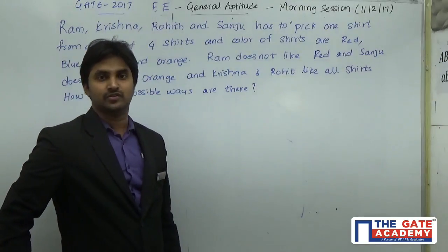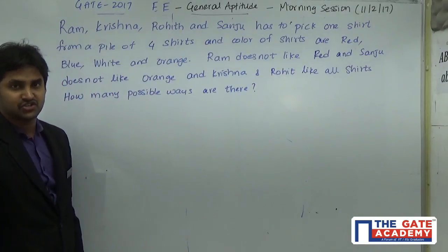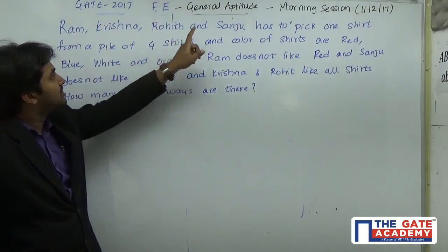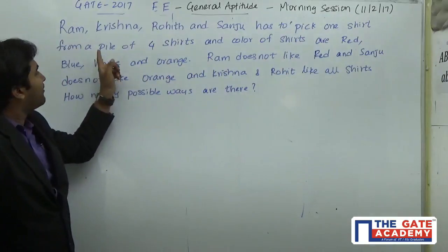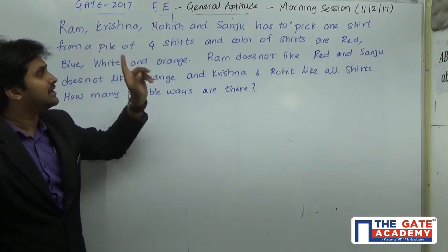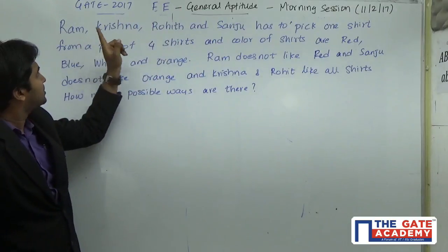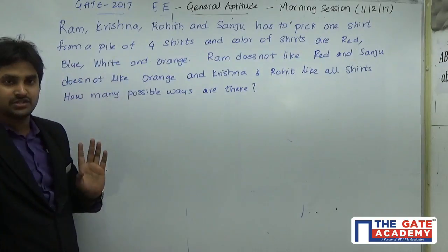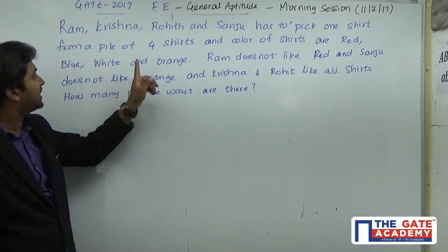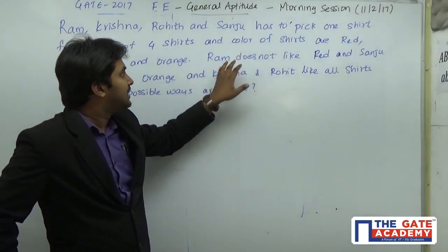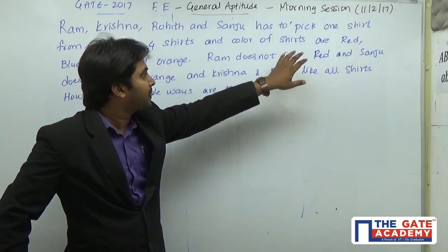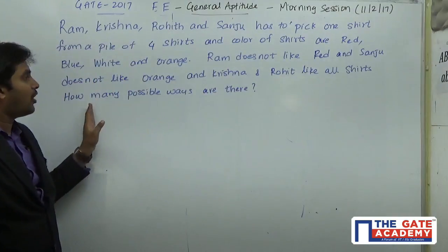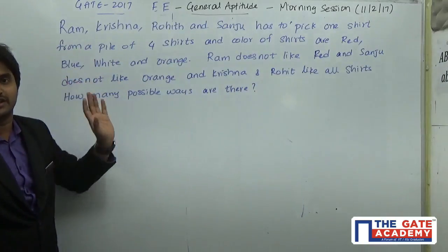Hello students. This question is from GATE 2017 Electrical, Morning Session, and the subject is General Aptitude. Ram, Krishna, Rohit, and Sanju each have to pick one shirt from an available pile of four shirts. The colors are red, blue, white, and orange. The conditions given are: Ram does not like red, Sanju does not like orange, and Krishna and Rohit like all shirts. How many possible ways are there so that everyone gets a liked shirt?